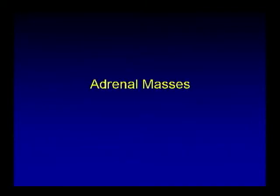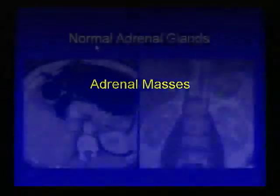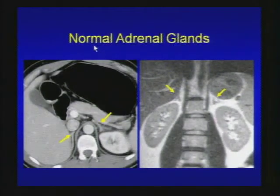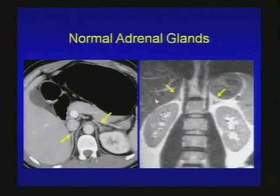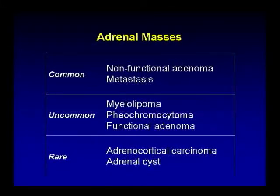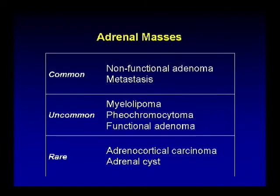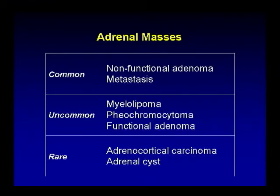Now let's move on to adrenal masses. Normal adrenal glands have a lateral and medial limb and look like an inverted Y on coronal image. Common adrenal masses include non-functional adenoma and metastatic disease. Uncommon ones include myelolipoma, pheochromocytoma, functional adenoma, and the rare adrenal cortical carcinoma and adrenal cysts.